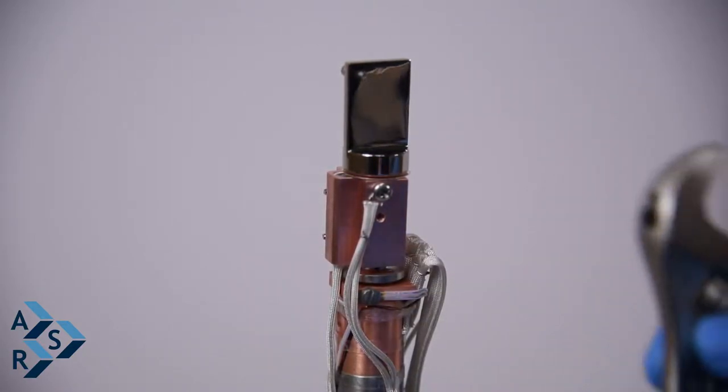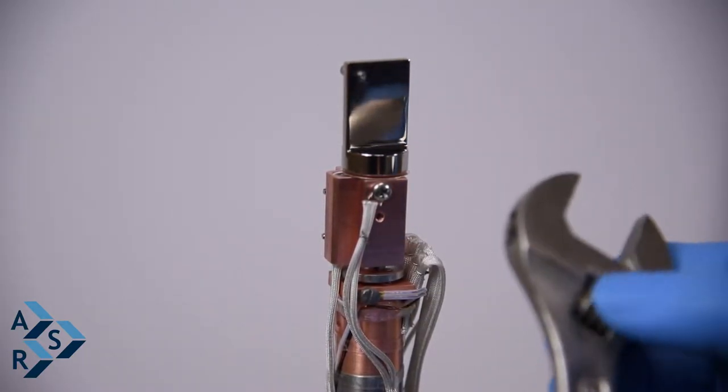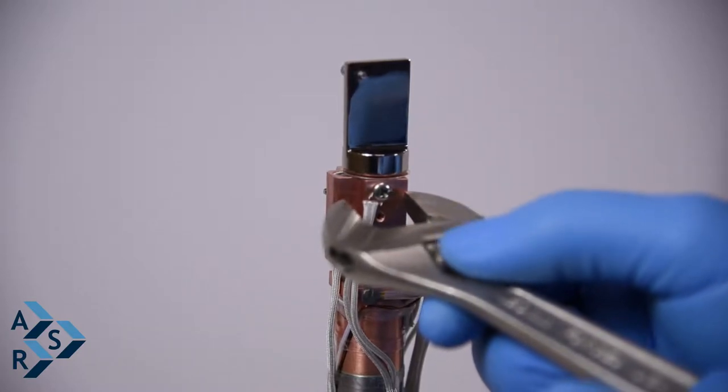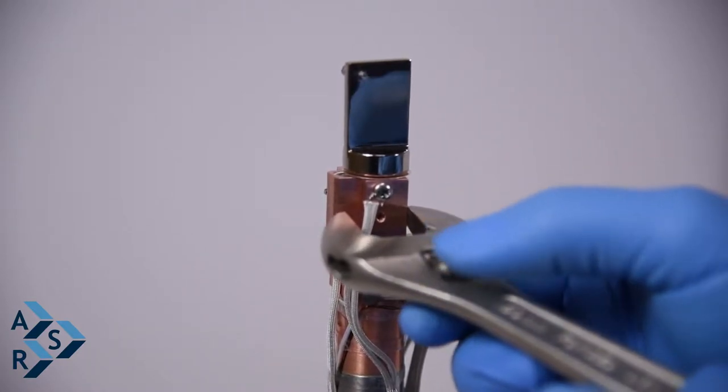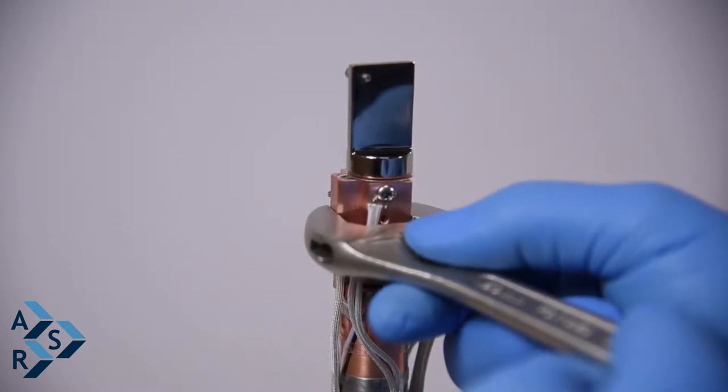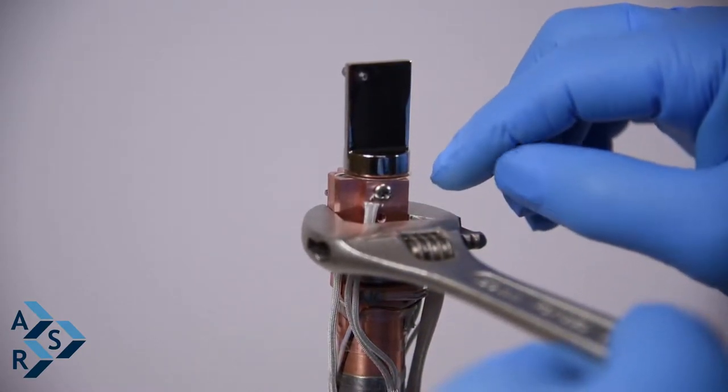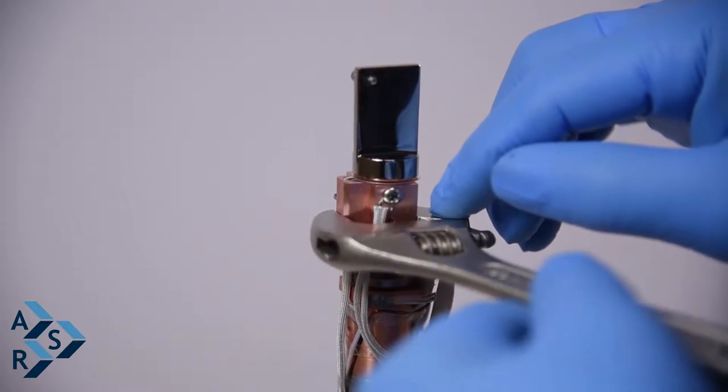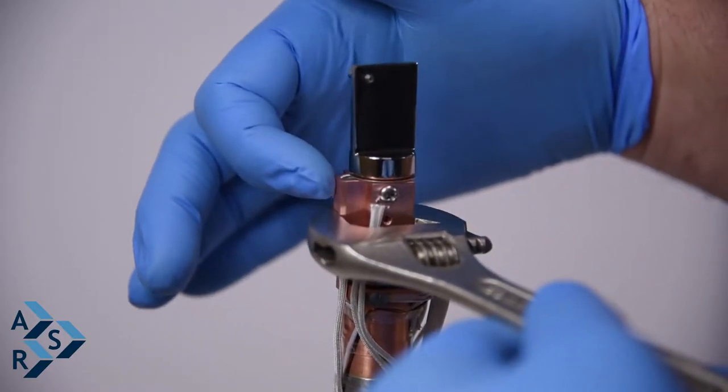What I recommend you use is an adjustable wrench, and you want to hold it at this part of the interface. Snug it. You can put electrical tape on both sides of the adjustable so you don't scar the copper.